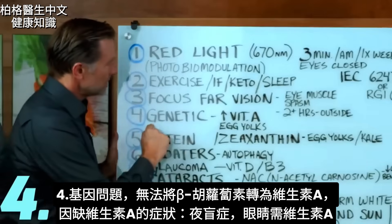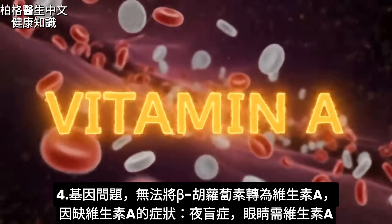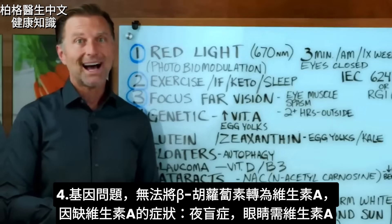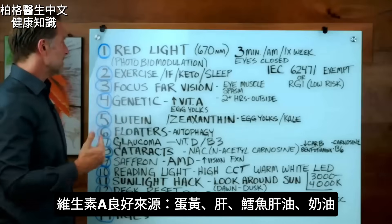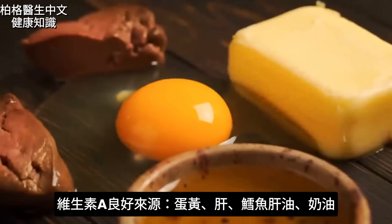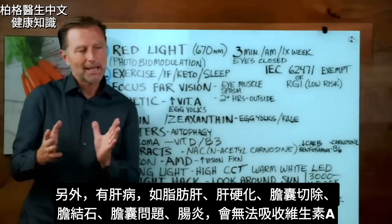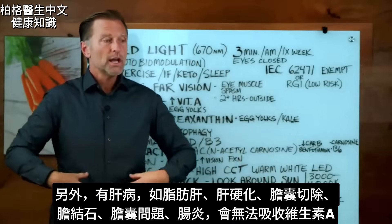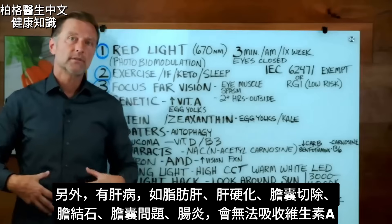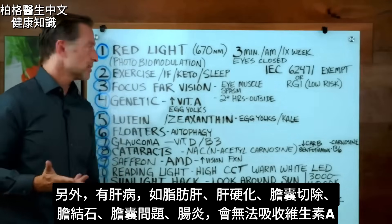Number four: there is a genetic problem converting beta-carotene into vitamin A, which is going to affect the eye, because one symptom of a vitamin A deficiency is night blindness. Our eyes need vitamin A. Good sources include egg yolks, liver, cod liver oil, and butter. Also realize that if you have a bad liver, fatty liver, cirrhosis, no gallbladder, a gallstone, or inflammation in your gut, you might not be able to absorb vitamin A.